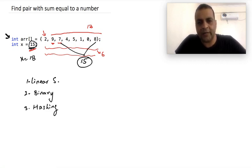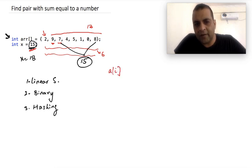So if you look at it, for each element ai in the array we are trying to find x minus ai in the array.